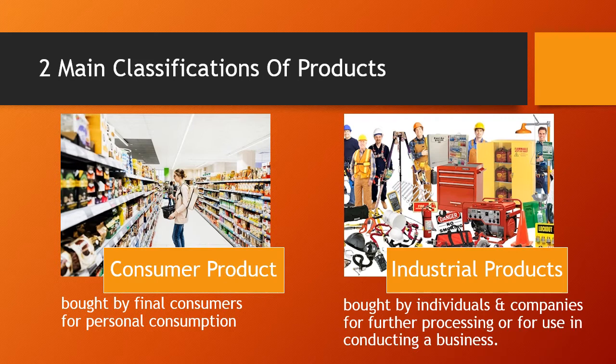Industrial products are generally broken into three major categories. The first is materials and parts, which includes raw materials, manufactured materials, and manufactured parts. Raw materials can be things like farm products — corn used for making ethylene — or natural products such as silver used in making components. Manufactured materials such as plastic, and parts like circuit boards, are component parts often used within making the final product.